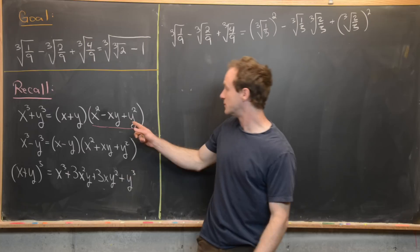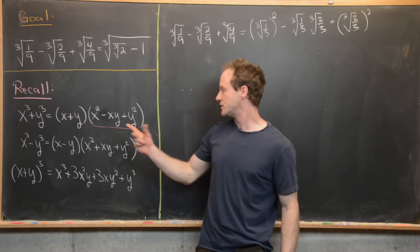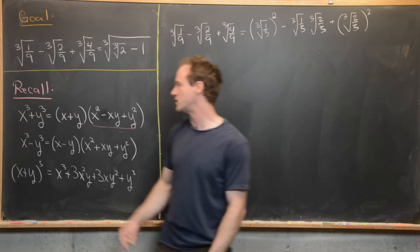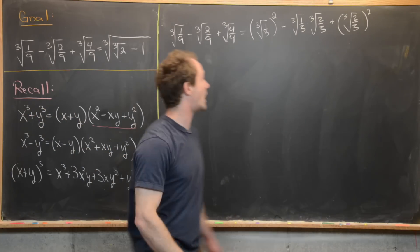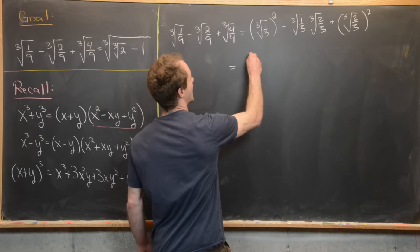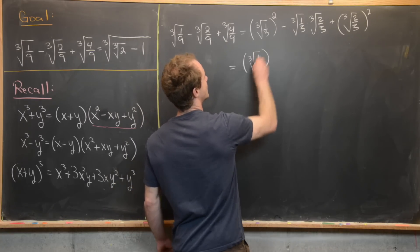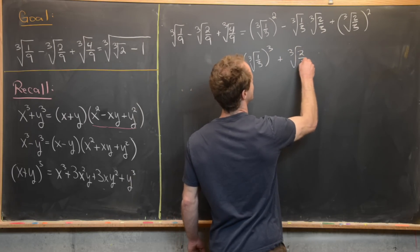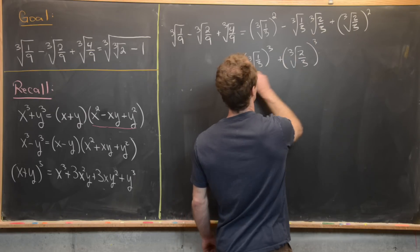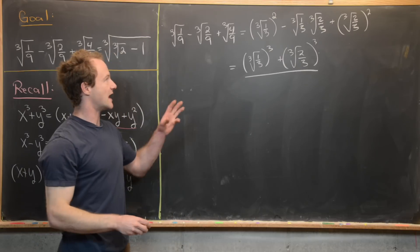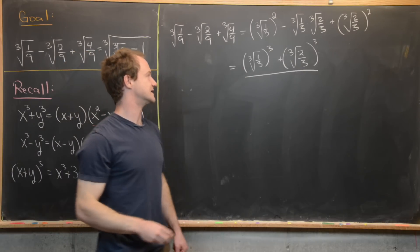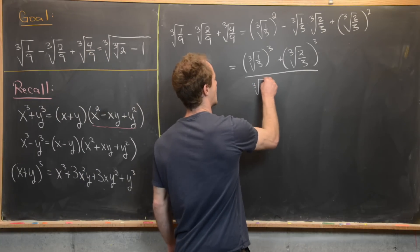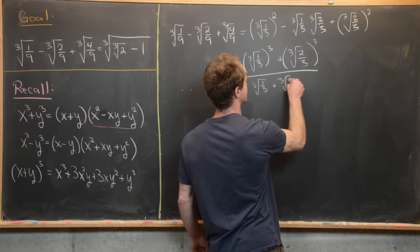That allows us to use the sum of cubes formula: x² - xy + y² equals (x³ + y³)/(x + y). So we can rewrite the expression as the cube root of 1/3 cubed plus the cube root of 2/3 cubed, all over x plus y — that is, the cube root of 1/3 plus the cube root of 2/3.